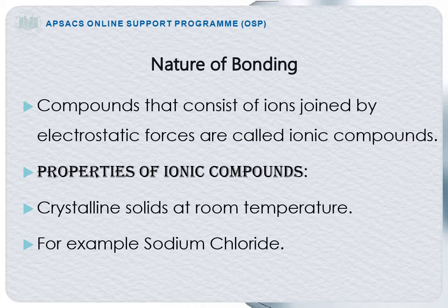Ionic bonds are formed between two atoms when one atom loses an electron to form a cation and the other atom gains an electron to form an anion. Since cations and anions have opposite charges, they attract one another through electrostatic forces. The total positive charge of cations must equal the total negative charge of anions, making ionic compounds as a whole electrically neutral.